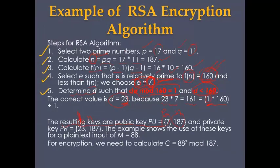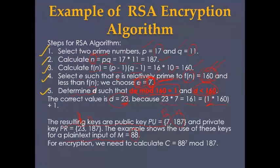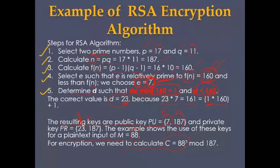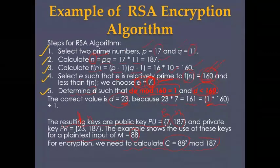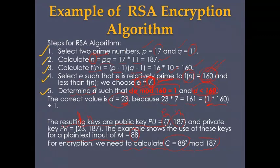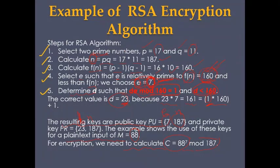For encryption, c = 88^7 mod 187. This is a heavy calculation done only by computers. That is all about the RSA example.